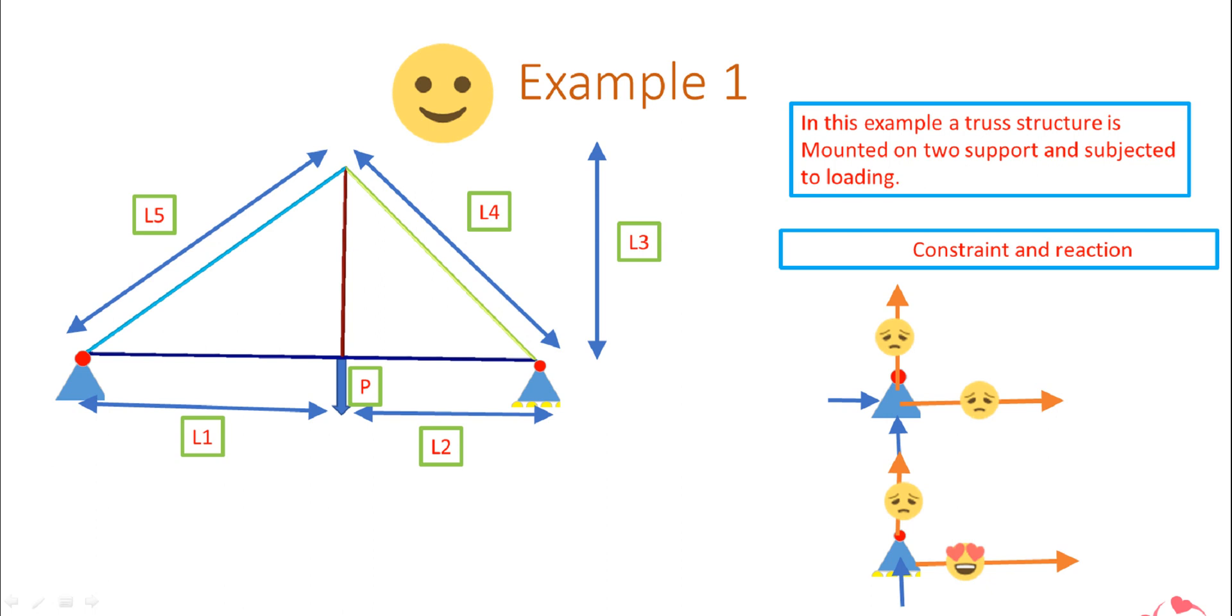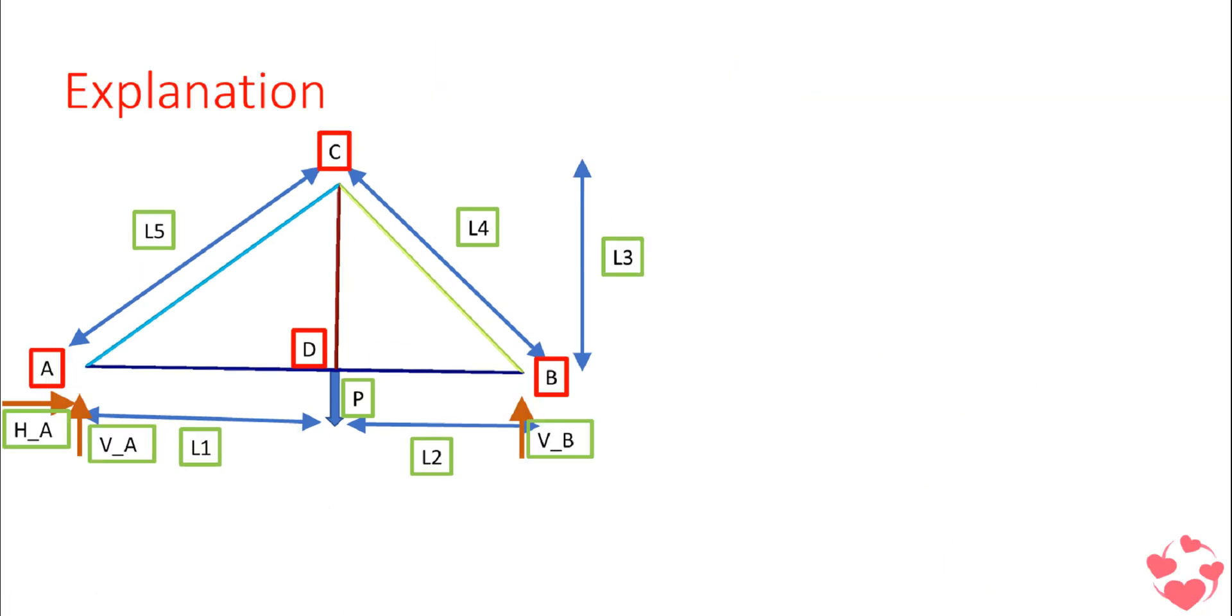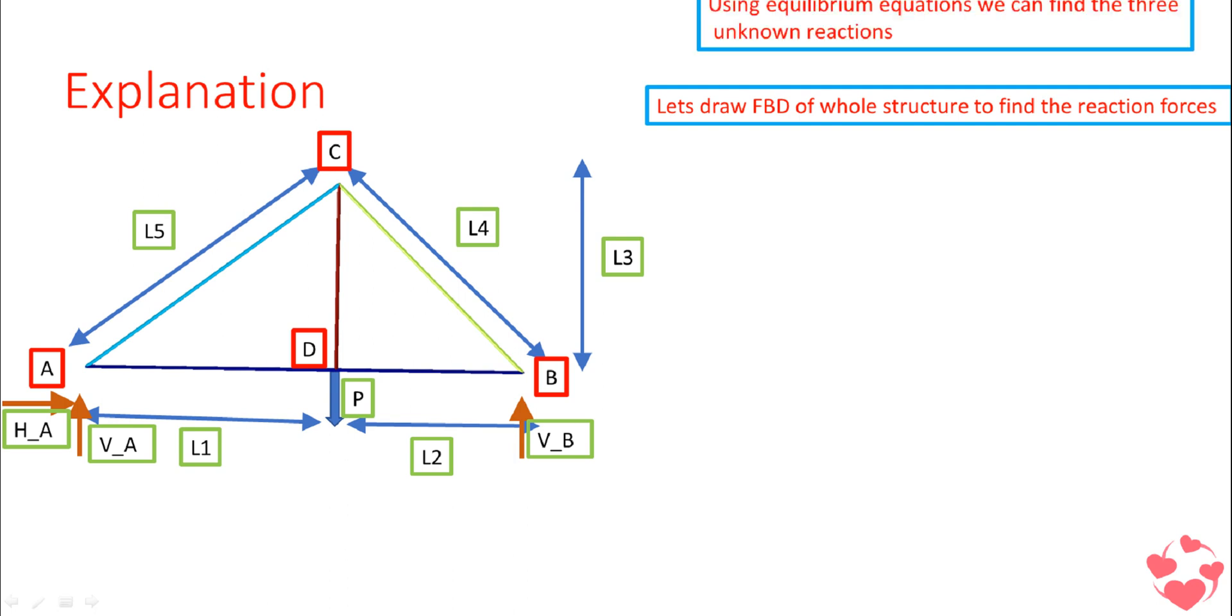Let's start our mathematical equations. First, we need to isolate the structure and replace the support by its reaction, then we will find the reactions. Starting from our equilibrium conditions, this is the structure. At point A we are getting VA and HA, and at point B we are getting only VB—no HA, no HB on point B, as it is a roller support.